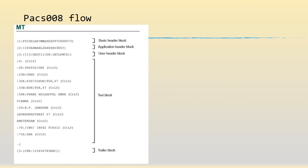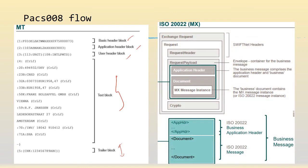Looking at message structure comparison: the MT format has a header block, application header block, user header block, the actual text block where the message content sits, and a trailer block for security. Similarly, an MX message has SwiftNet envelope headers, a request and request header, and the actual request payload. The payload splits into an application header and a document message. The document is where the actual message content is placed — synonymous to the MT text block. The trailer block is similar to the crypto element in MX.